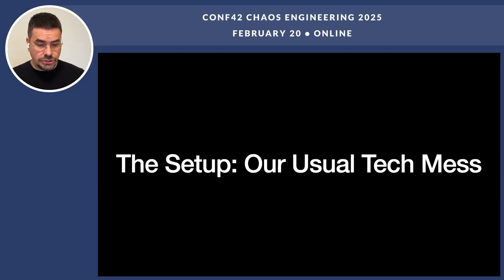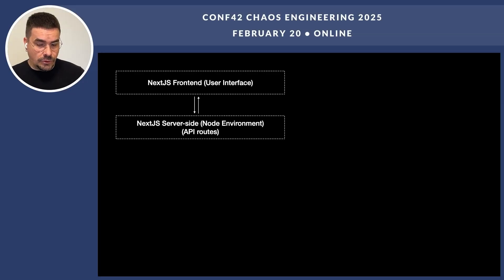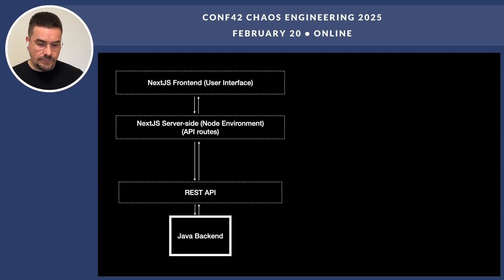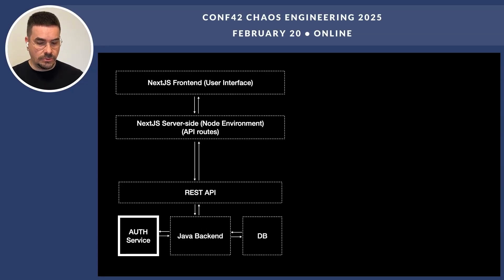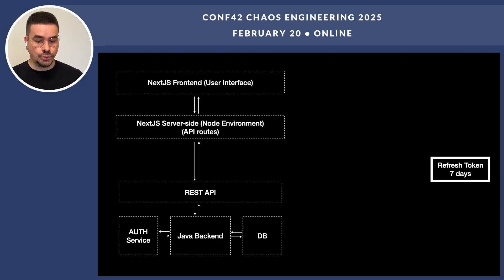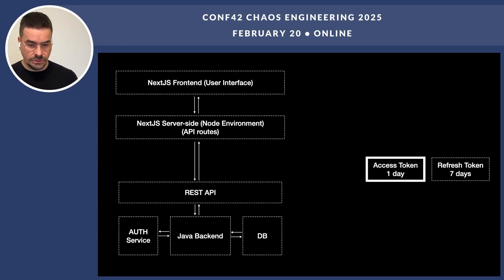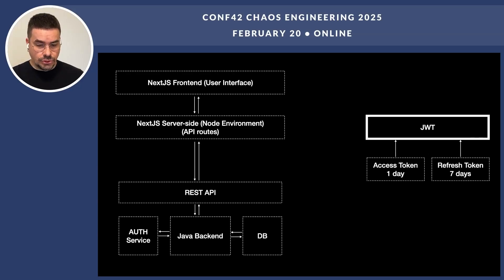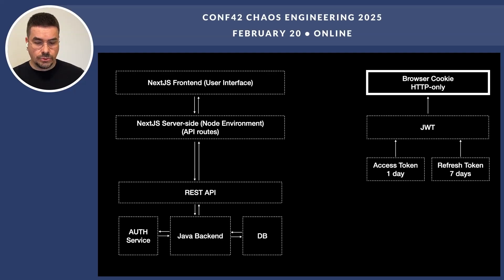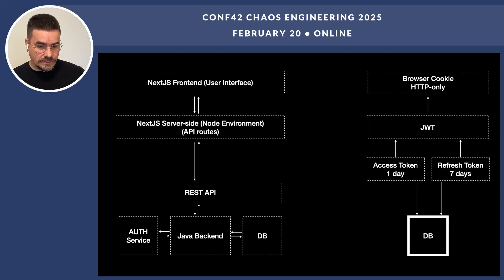Let me paint a picture of what we're dealing with. We have a front end built with the Next.js framework, a REST API for a Java backend and database, and an authentication service managing logins and user sessions. We also have two types of tokens: a refresh token which lasts a week, and an access token which lasts a day. Both tokens are packed into a JWT — JSON Web Token — stored in cookies on the client side, and also stored in the database on the server side.